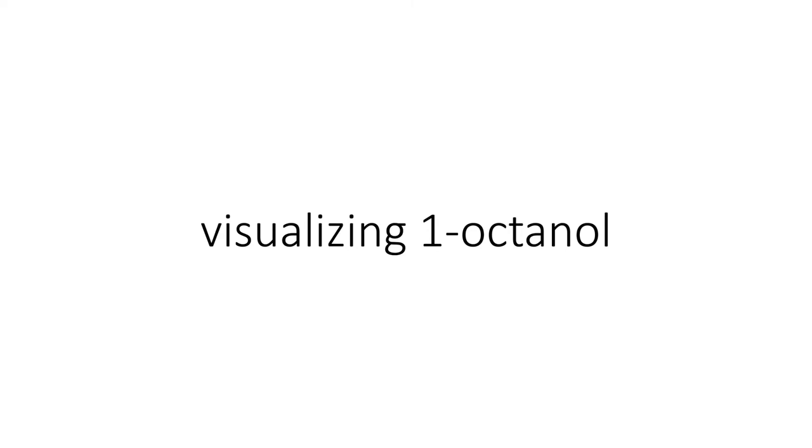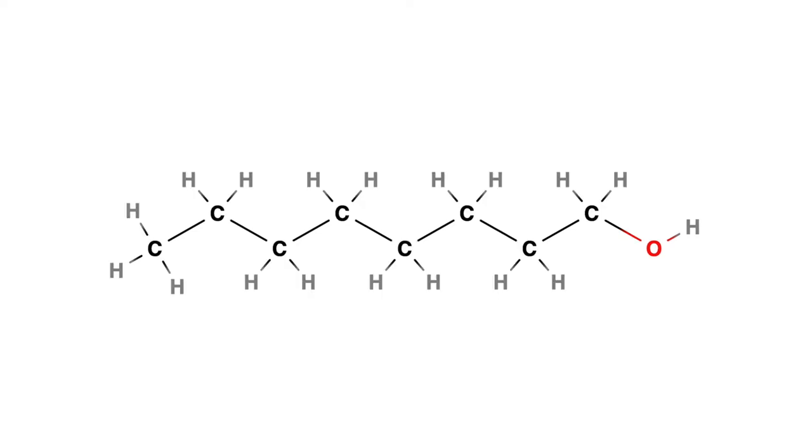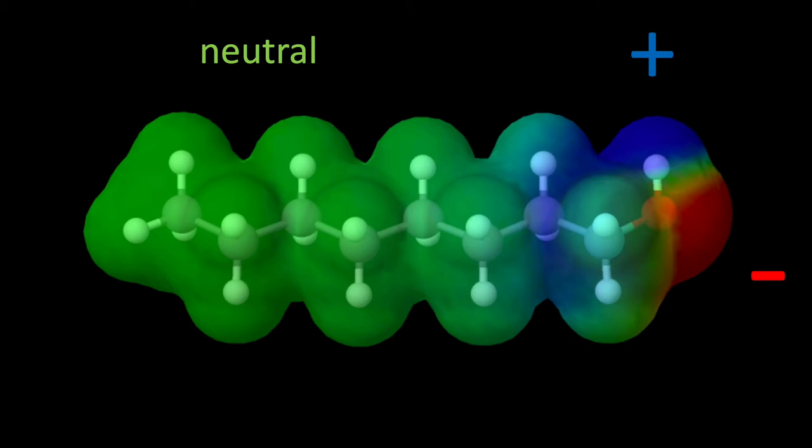Let's try to visualize one octanol. As we saw you can use the skeletal formula as a streamlined way of picturing each of these carbon, hydrogen, and oxygen atoms in one octanol. But this is a two-dimensional structure of a three-dimensional molecule. You can see here each of those carbons is tetrahedral. The oxygen at the right is bent. And there's another aspect of the three-dimensional molecule that you can see here.